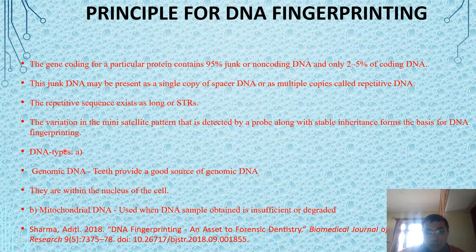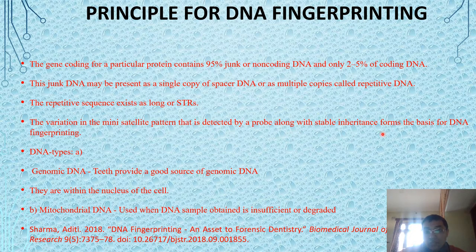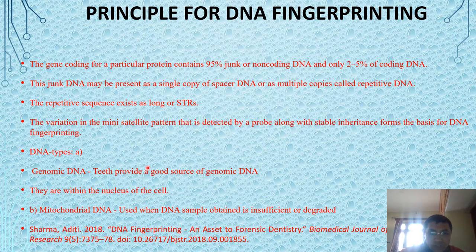The variable number of tandem repeats in minisatellite regions are detected by a probe — sometimes a radioactive probe — on a cellulose membrane. This probe, along with stable inheritance, enables DNA fingerprinting. Genomic DNA can be obtained from your tooth, your blood — blood is a good source of genomic DNA — or your nails, since genomic DNA is present within the nucleus.